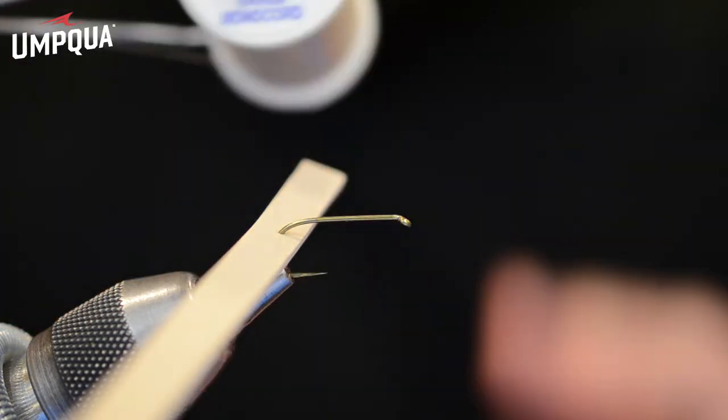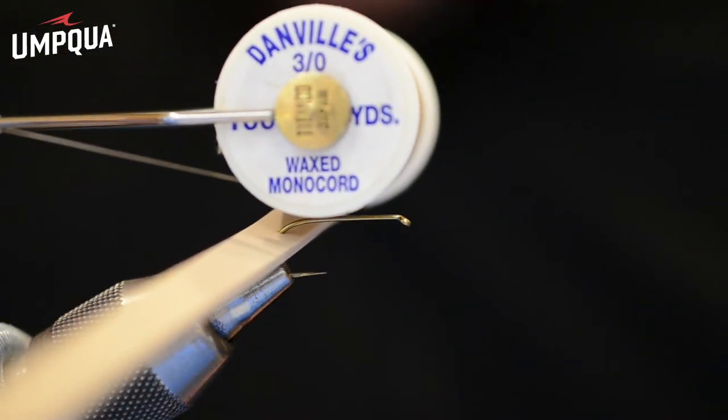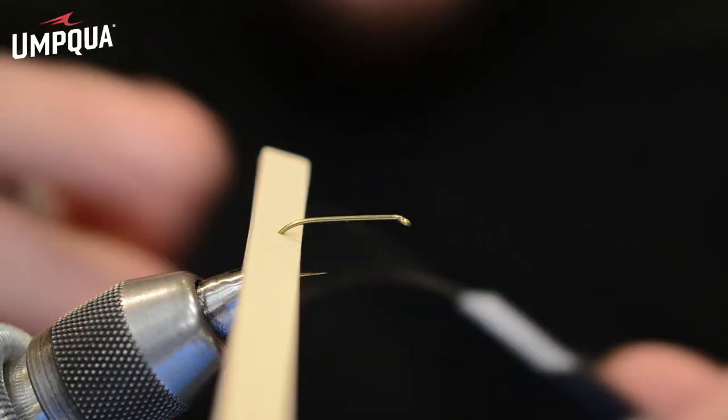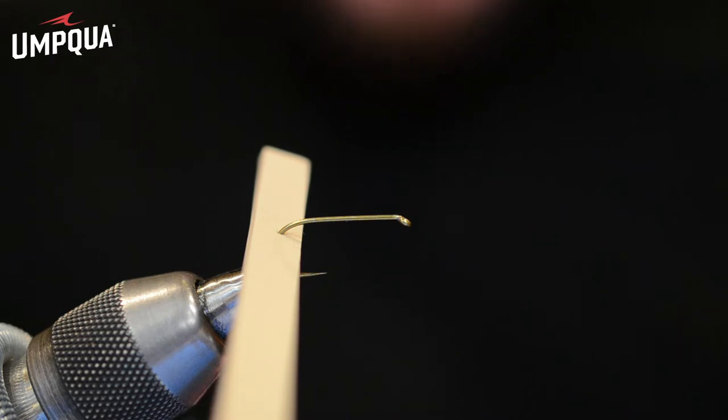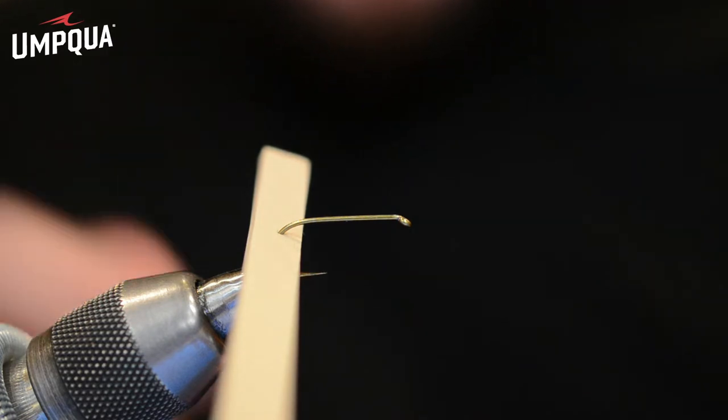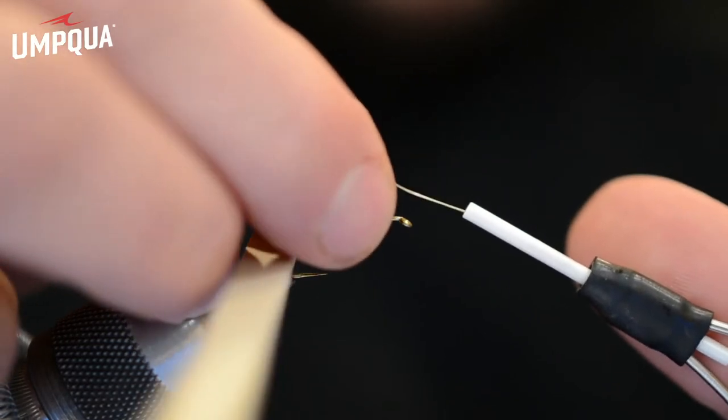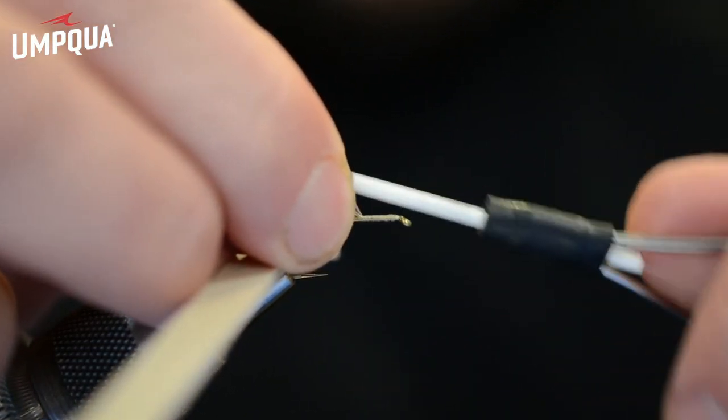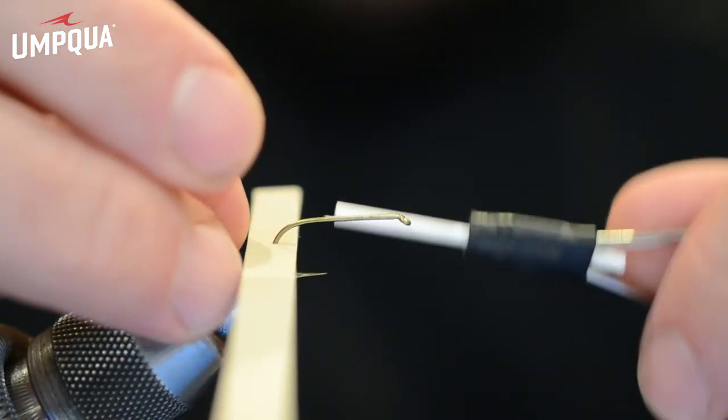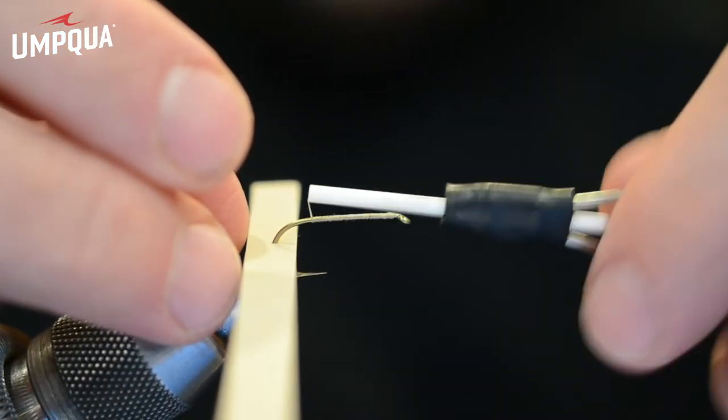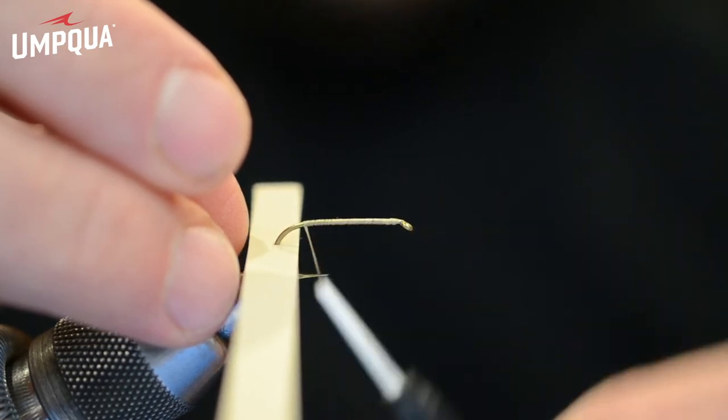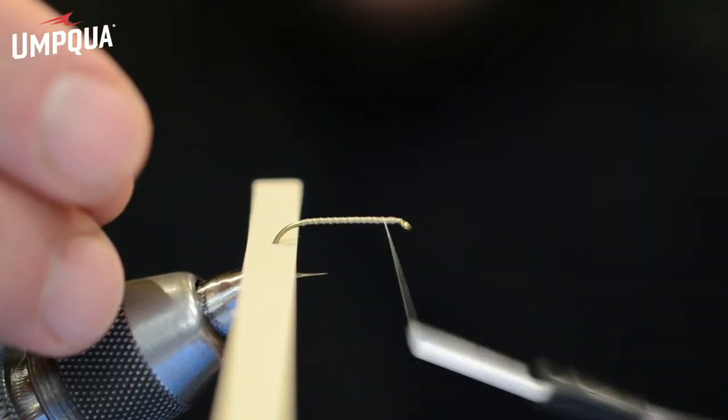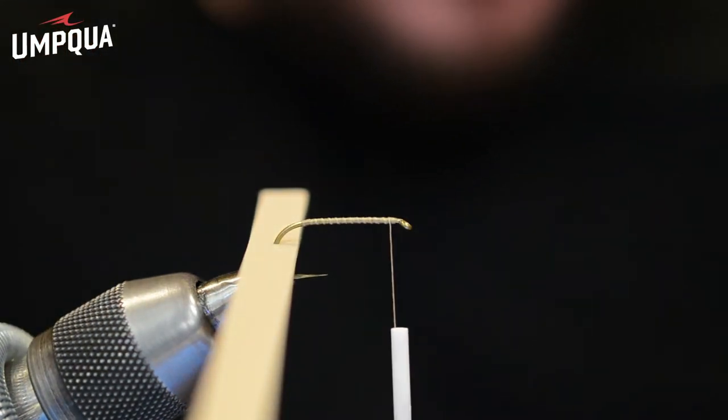Now, I'm going to take my thread here. This is Danville 3-0 monochord in tan. Obviously, you can tie this in whatever color you like. You just change your foam color, and change your thread color, and change your rubber legs color. It's easy enough to make those adjustments. I'm going to start this thread up here just behind the hook eye, and I'm going to dress the hook shank with a nice, clean, smooth layer of thread all the way back to the bend of the hook. So once I get all the way back here, I'll come forward again. And you can see how I sort of cross-hatched that. You can see that's got some texture to it.